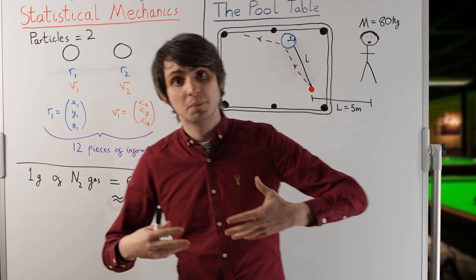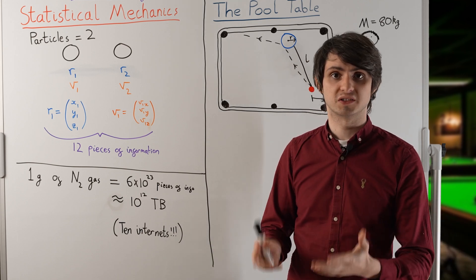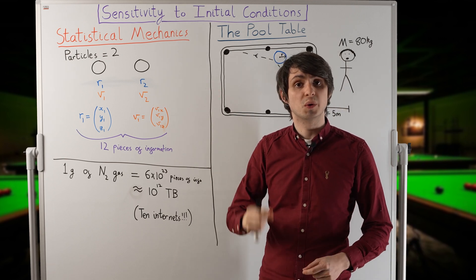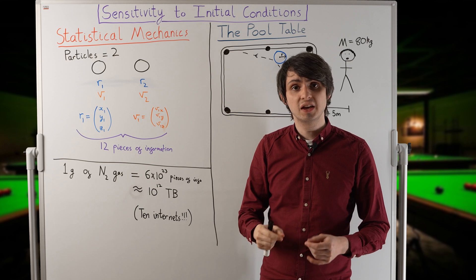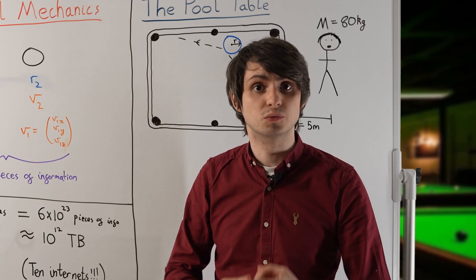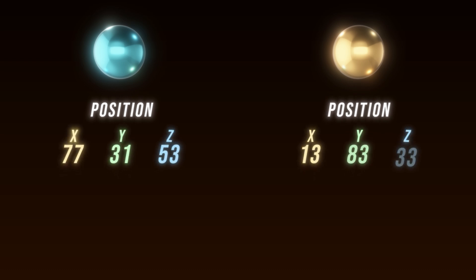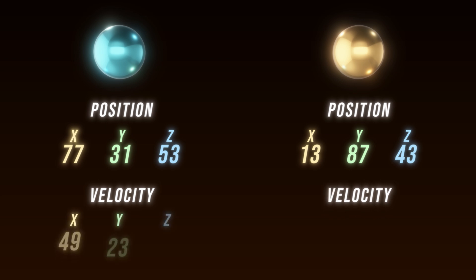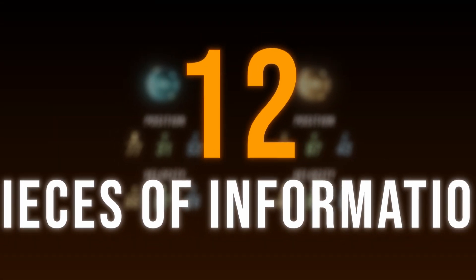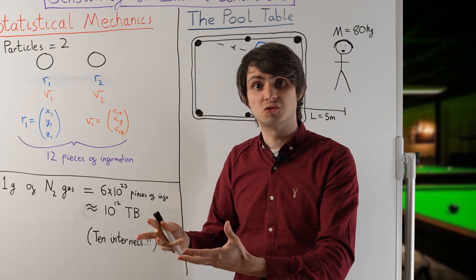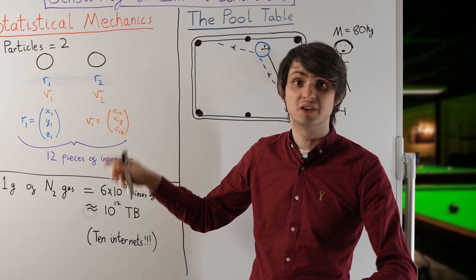First of all, we need statistical mechanics because it's too difficult to keep track of huge numbers of particles. Let's consider a system of two particles. Assuming Newton's laws hold, we can predict exactly how this system will behave if we know each particle's initial position and initial velocity. We can record this data by writing down three numbers to describe each particle's position and three numbers to describe each particle's velocity. For each particle, then, we need six numbers to describe it. Since we have two particles in this system, we need 12 pieces of information in total.